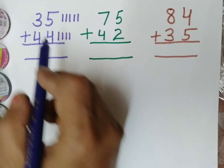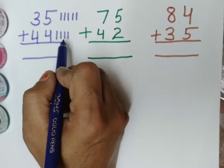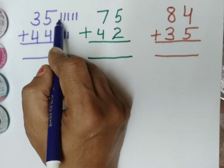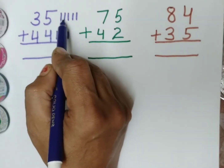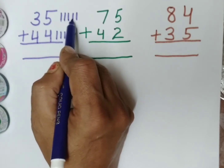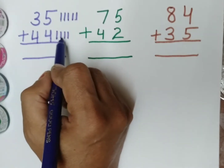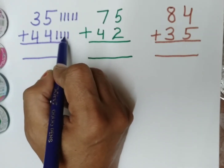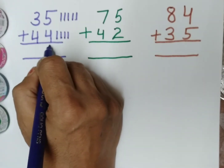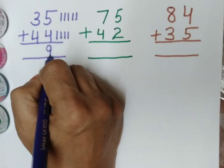Now we will count these lines together: 1, 2, 3, 4, 5, 6, 7, 8, 9. So the answer is 9.